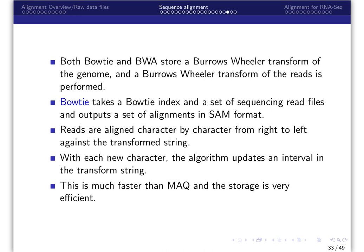Bowtie, BWA, and SAM tools are more powerful tools that have largely replaced MAC for alignment of short next-generation sequencing reads to a reference genome and detection of single nucleotide variants. Both Bowtie and BWA store a Burrows-Wheeler transform of the genome, and a Burrows-Wheeler transform of the reads is performed. A Burrows-Wheeler transform is a way to rearrange character strings into runs of similar characters as a means of performing compression.